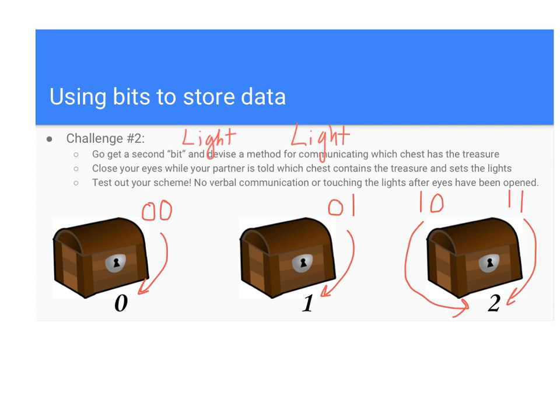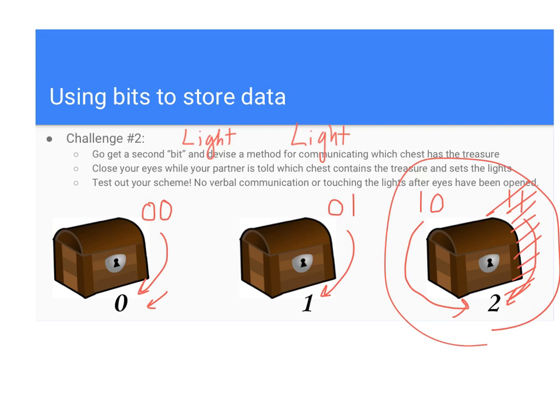Mathematically speaking, the one-zero solution is probably the better one — you'll see why in a later chapter. But either of these solutions would have worked. Any encoding you came up with would have been acceptable, as long as you found some way to switch the lights on and off to communicate where the treasure was.